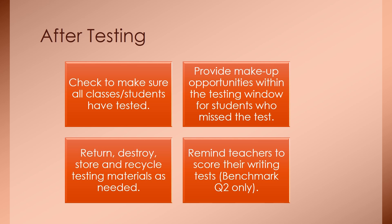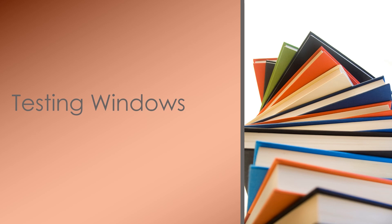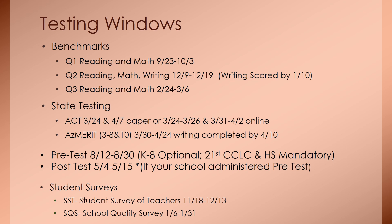Any materials that need to be returned to A&E should be returned as soon as possible once testing is completed. Quarter 2 benchmark tests will include a writing portion. The student's writing will be scored by your school. It will be important to develop a plan for scoring and making sure all scoring is completed by the end of the scoring window. The testing window dates are listed on the district assessment calendar, but we have also listed them here for quick reference. Benchmark tests will be held for quarters 1, 2, and 3. State testing will start in quarter 4. District pre-tests take place in August and post-tests will take place in May. Pre- and post-tests are optional, and in addition to benchmarks and state testing.